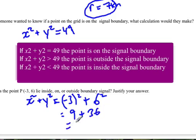And that equals 45. Now, 45 is less than 49. Therefore, point P is inside the signal boundary.